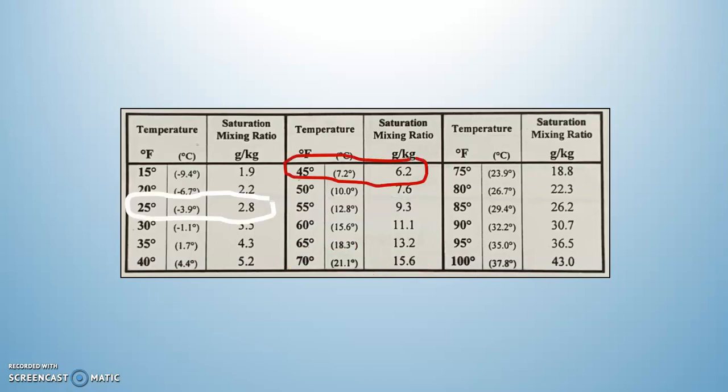Let's say we knew that the air temperature was 45 degrees and the mixing ratio was 2.8 grams. If we know the air temperature is 45 degrees, what is the saturation mixing ratio? In other words, how much water could the air hold at 45 degrees? The answer is 6.2 grams. And if we know the mixing ratio was 2.8 grams, what is the dew point temperature? 25 degrees. So how many degrees would the air need to cool in order to become saturated? That 45 would have to cool down to 25 — it would have to drop 20 degrees.